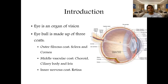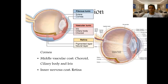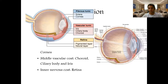The eye is an organ of vision and is made up of three coats. The outer one is the fibrous coat — as seen in this picture, the blue colored area is the fibrous coat which includes the sclera and the cornea. The sclera is the white part of the eye, while the cornea is transparent and avascular.